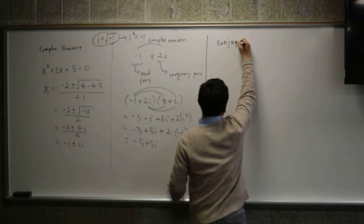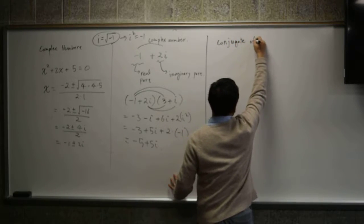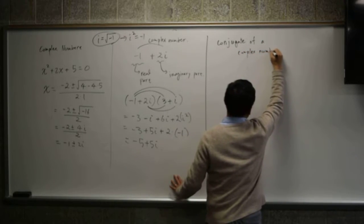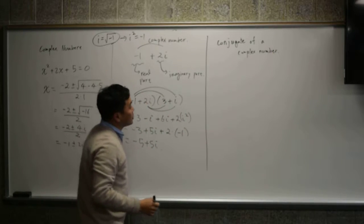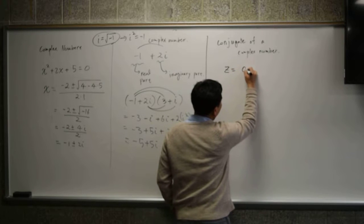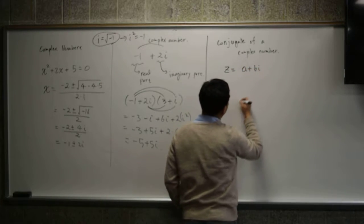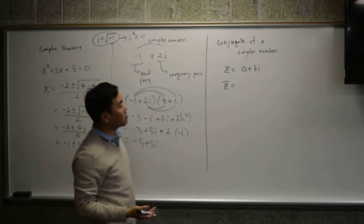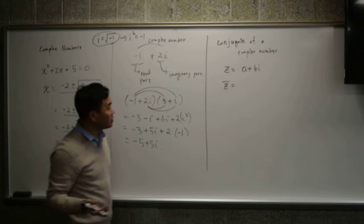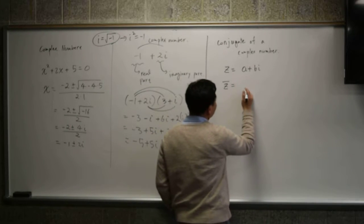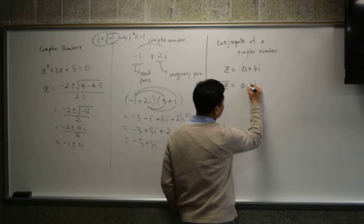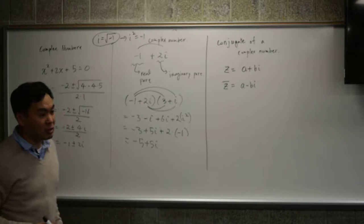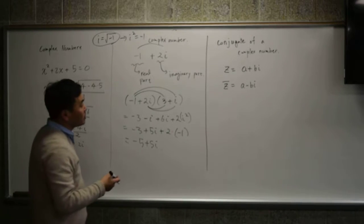The conjugate of a complex number. If you have a complex number z, which is a plus bi, then we can define the conjugate, or sometimes more improperly called complex conjugate of this number as a minus bi. In other words, the imaginary part is negated while the real part is unchanged. Now, why is the conjugate of a complex number important?